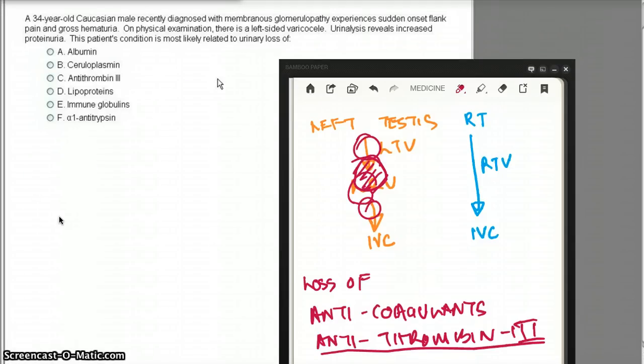Now let's talk about some of the other options. Albumin is also lost in massive quantities in urine in nephrotic syndrome, leading to hypoproteinemia, decreased intravascular oncotic pressure. Fluid shifts to the interstitium, resulting in edema. Protein loss results in negative nitrogen balance, but it does not lead to hypercoagulable state. So that is not the correct answer.